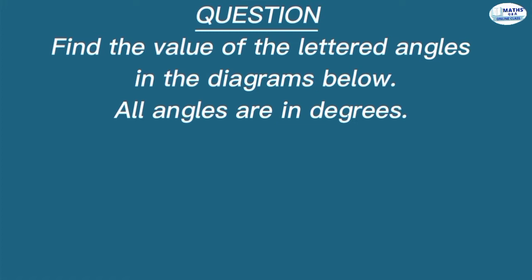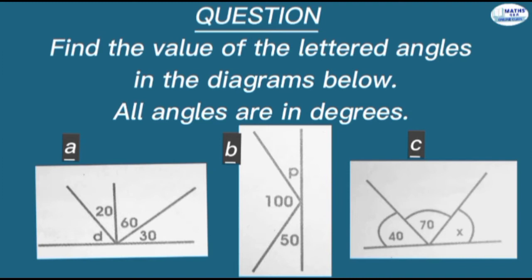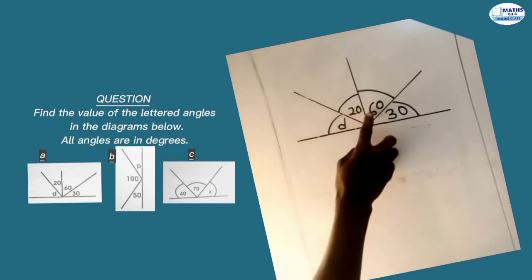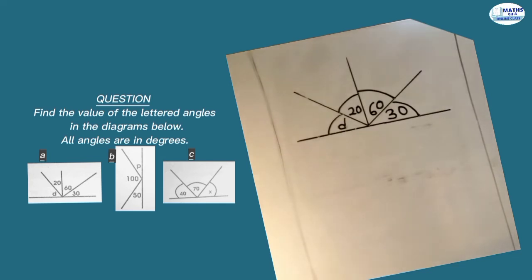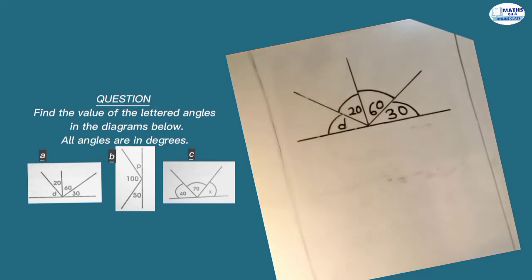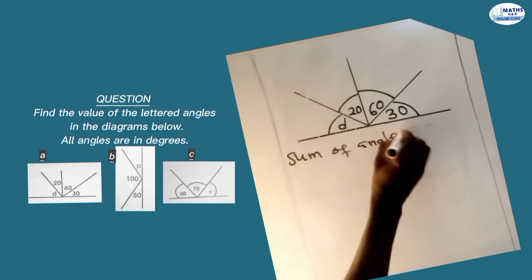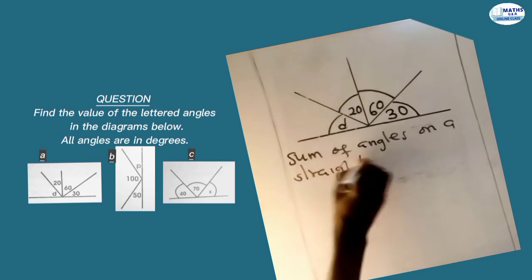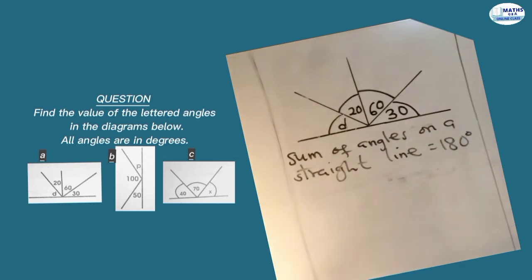Find the value of the letter angles in the diagrams below — all angles are in degrees. We are given d, 20, 60, and 30, which are all angles formed on a straight line. Since they are formed on a straight line, they sum up to 180 degrees. So the sum of angles on a straight line is equal to 180 degrees.